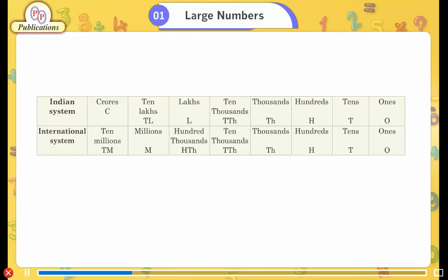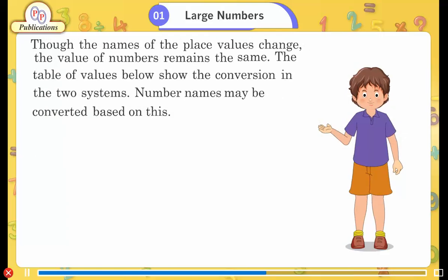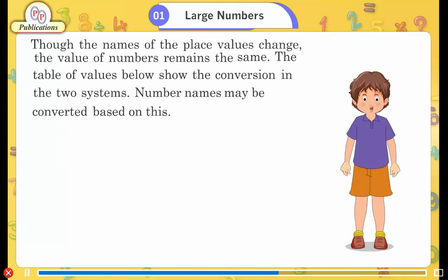Comparing the two systems: In the Indian system, the place values are — Crores (C), Ten Lakhs (TL), Lakhs (L), Ten Thousands (TTH), Thousands (TH), Hundreds (H), Tens (T), Ones (O). In the international system: Ten Millions (TM), Millions (M), Hundred Thousands (H), Ten Thousands (TTH), Thousands (TH), Hundreds (H), Tens (T), Ones (O). Though the names of place values change, the value of numbers remains the same.